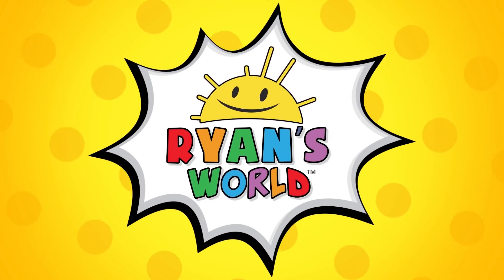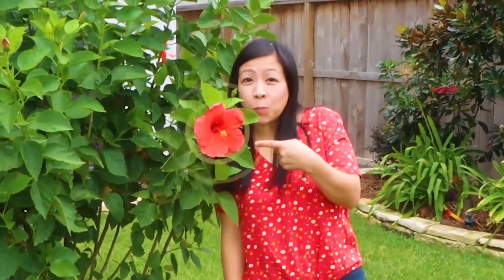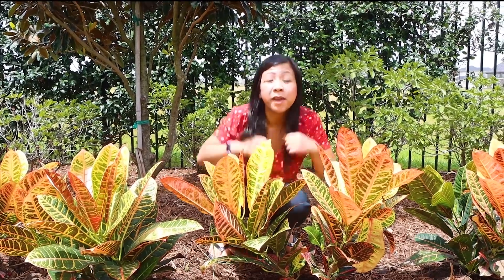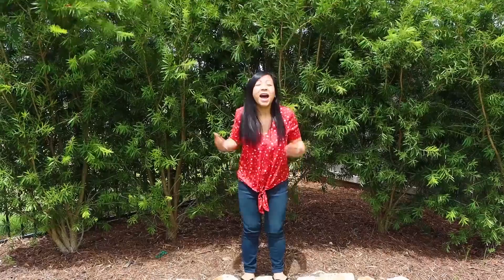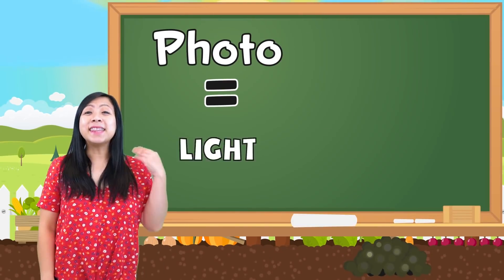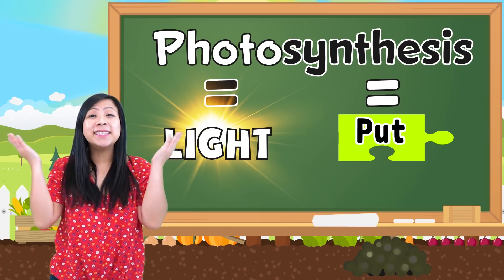Welcome to Ryan's World. Plants like this one, and this one, and even this one, all make their own food through a process called photosynthesis. Photosynthesis is when green plants use light energy to make their own food. Photo means light and synthesis means put together. So photosynthesis means using light to put together to make their own food.